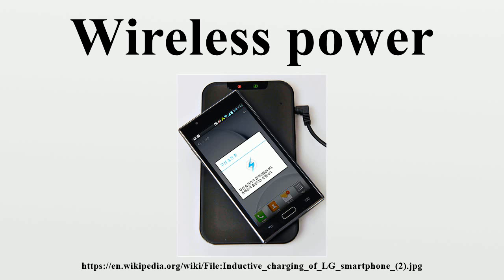Electric and magnetic fields are created by charged particles in matter such as electrons. A stationary charge creates an electrostatic field in the space around it, and a steady current of charges creates a static magnetic field around it. These fields contain energy but cannot carry power because they are static. However, time-varying fields can carry power. Accelerating electric charges, such as those found in an alternating current of electrons in a wire, create time-varying electric and magnetic fields in the space around them. These fields can exert oscillating forces on the electrons in a receiving antenna, causing them to move back and forth.